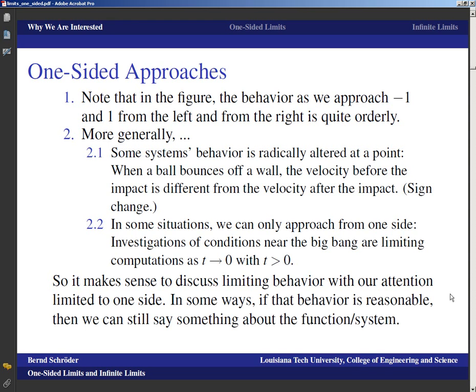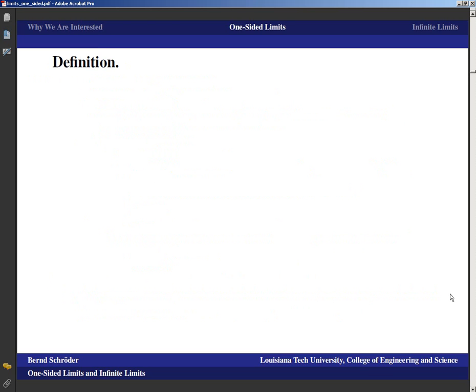In summary, it makes sense to discuss limiting behavior with the approach restricted to one side. If the function approaches something from one side, then we can still say something meaningful about the function and the system. That means we'd like to define limits in that situation — so we talk about one-sided limits. Here we'll work with the informal definition, since the formal definitions require epsilons and deltas, which you can learn in advanced calculus or introduction to analysis.